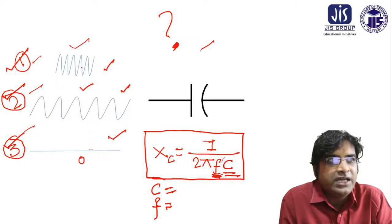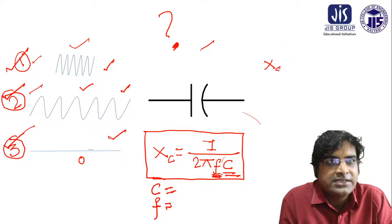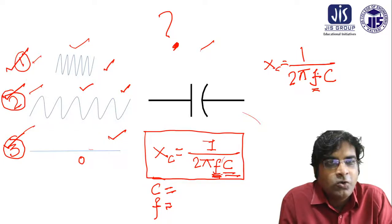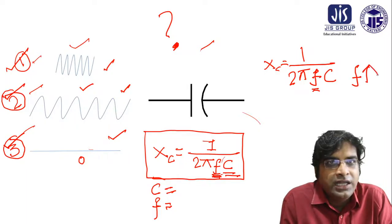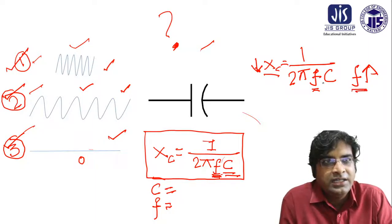If the f is high, considering the equation XC equals 1/(2πf), if f becomes high then XC becomes low. I think you got this point: if f becomes high then XC becomes low. If I increase f, then XC automatically decreases.